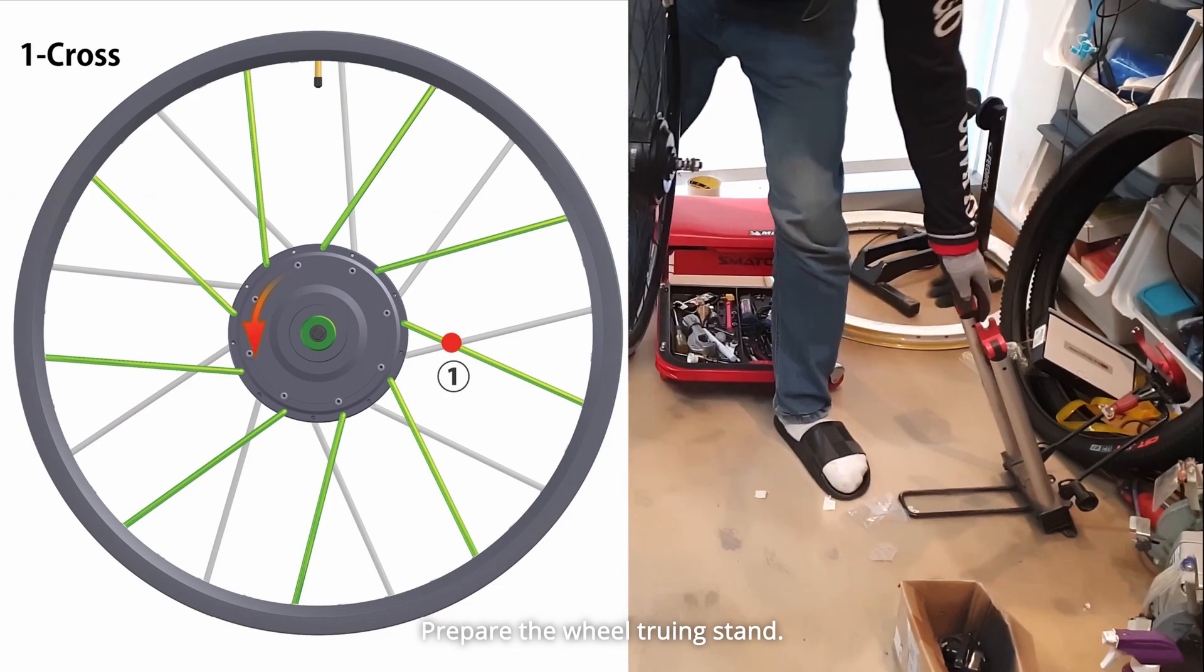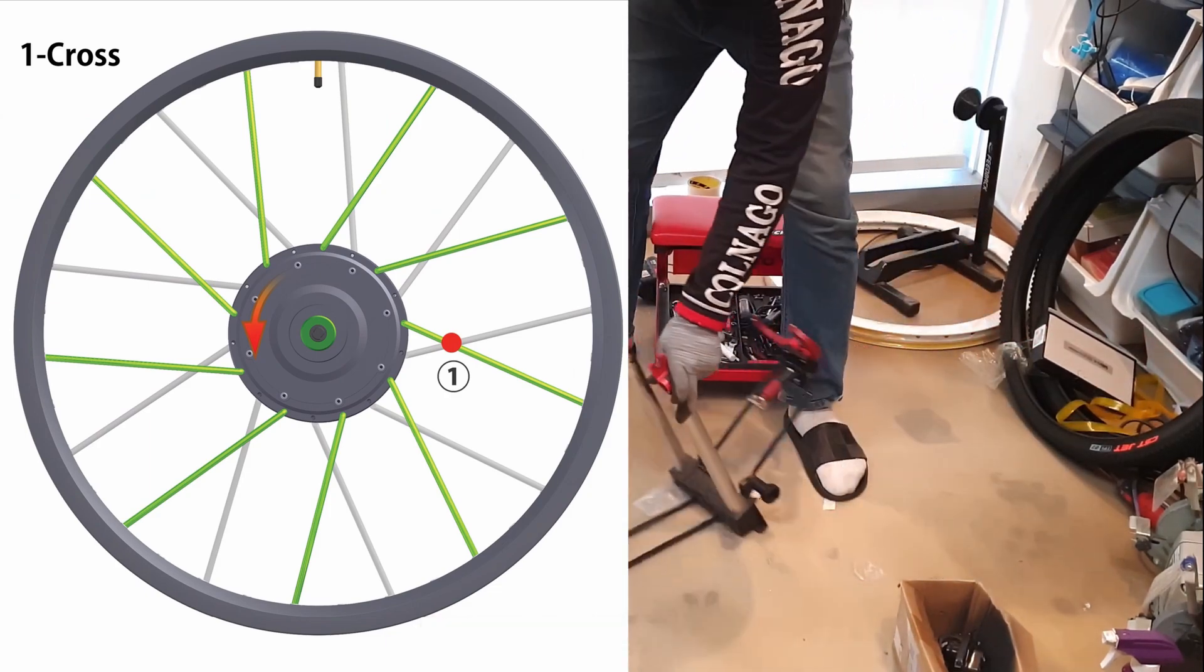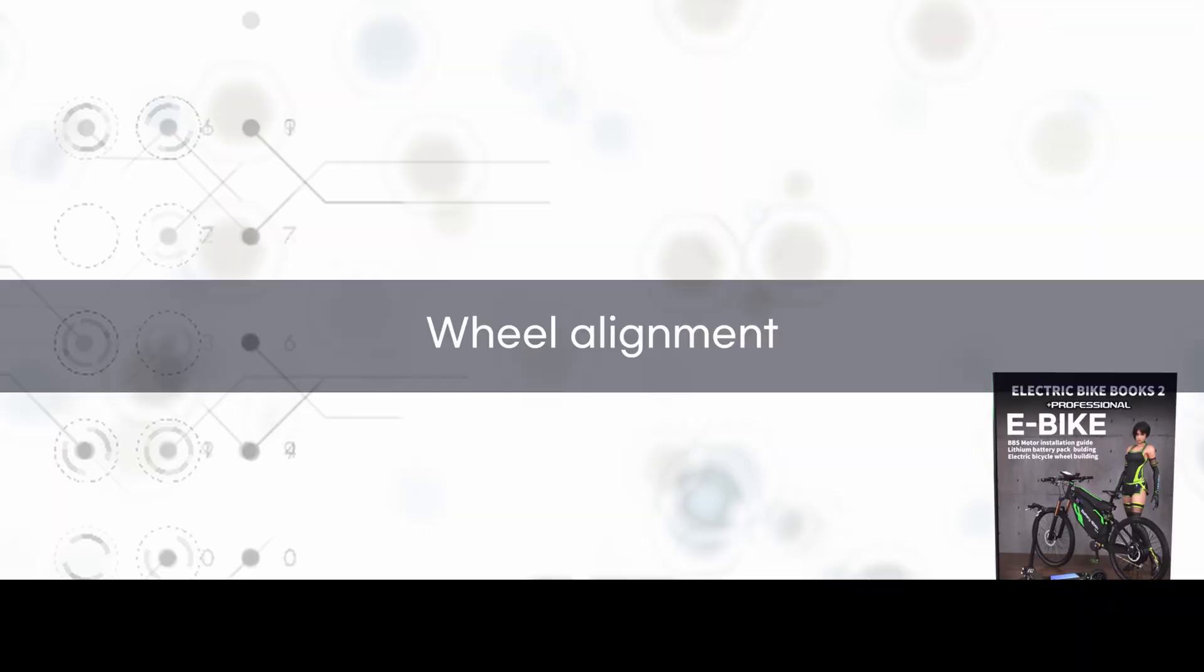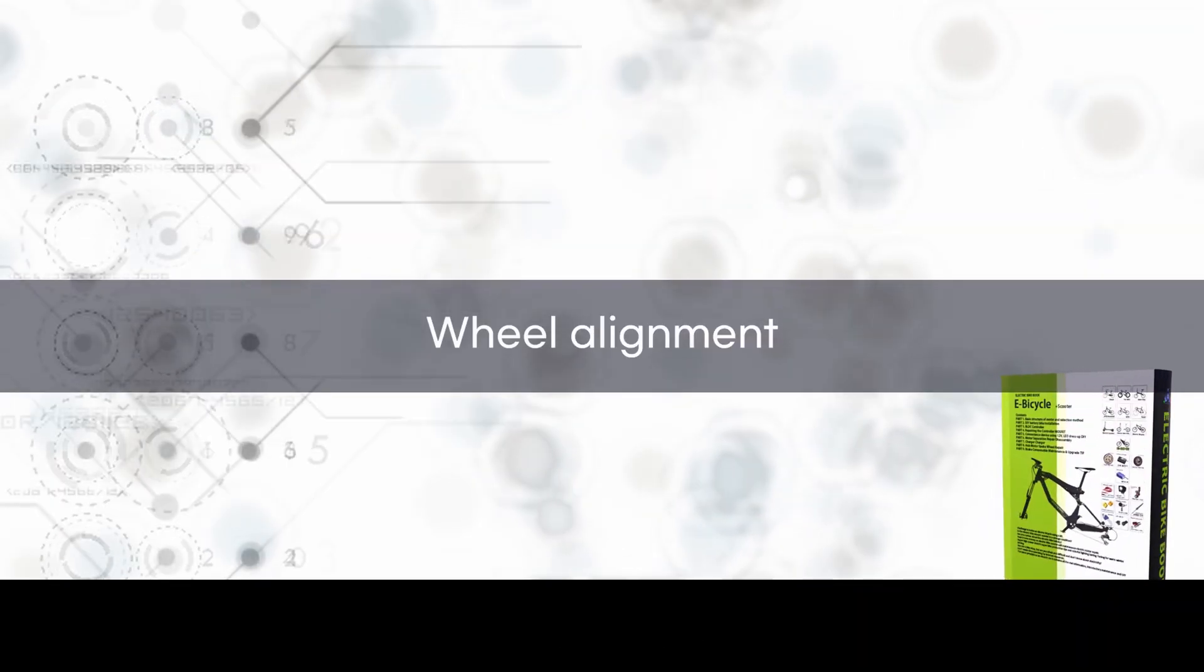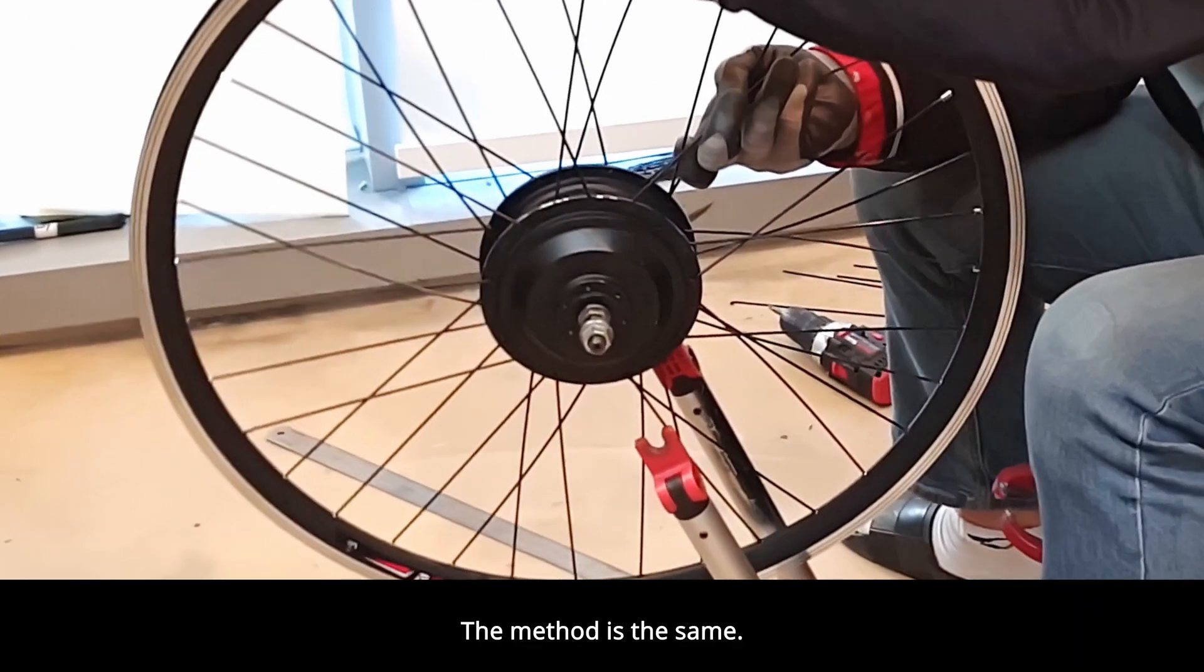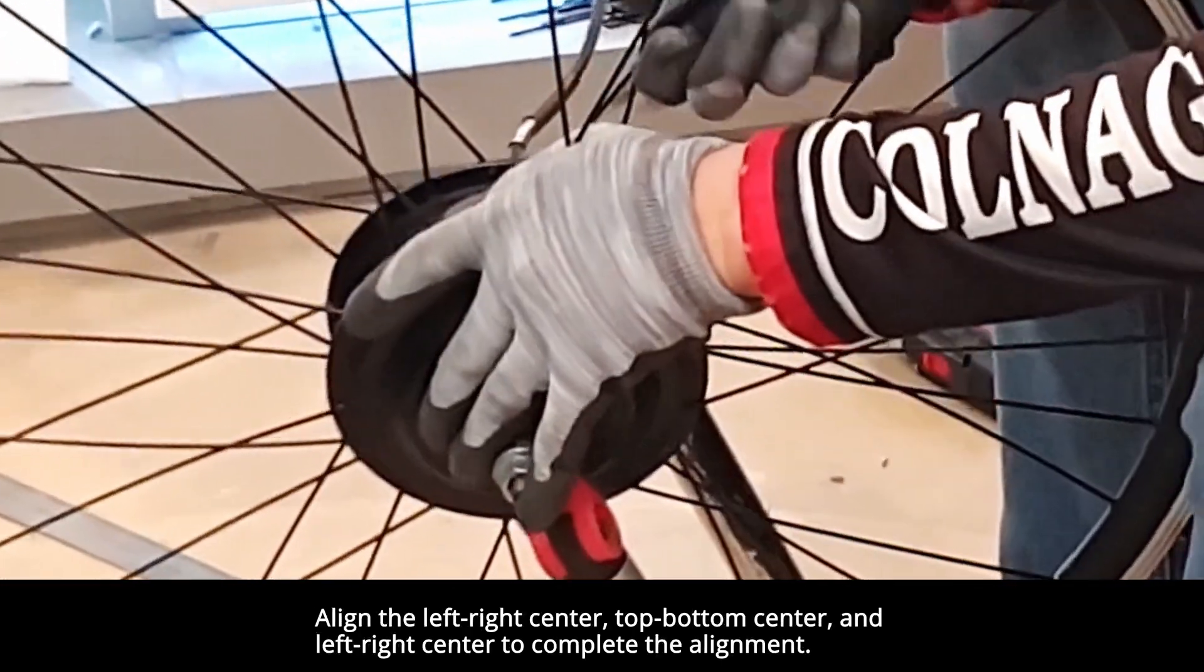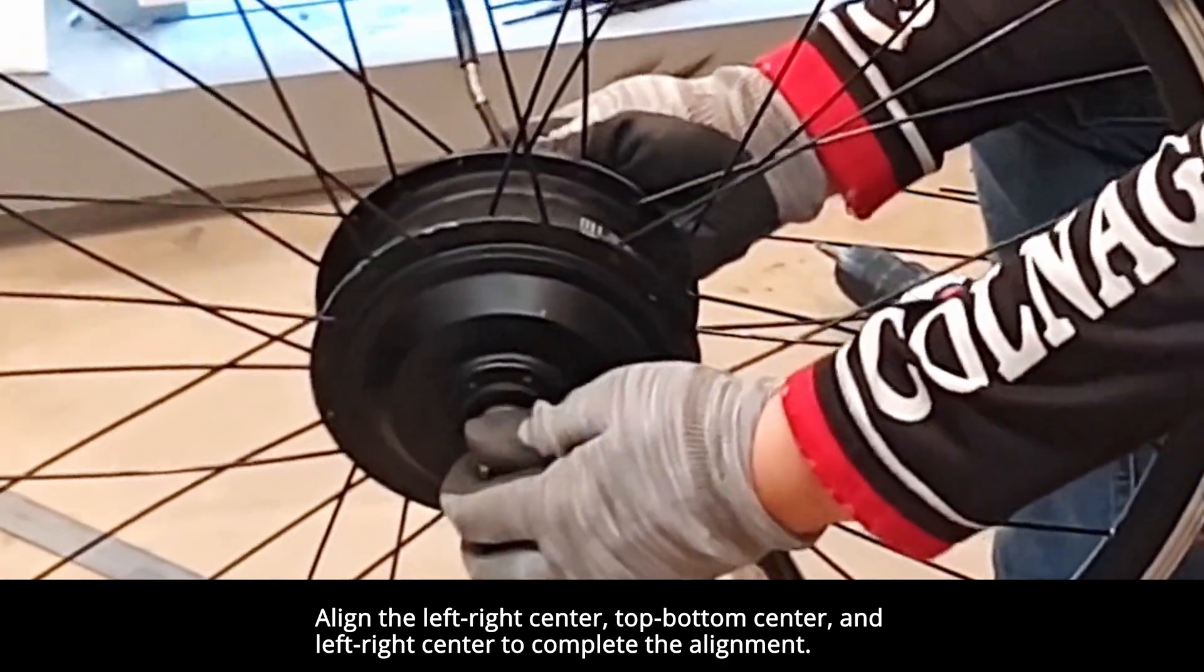Prepare the wheel truing stand. Install the wheel onto the wheel truing stand. Wheel alignment. The method is the same. Align the left-right center, top-bottom center, and left-right center to complete the alignment.